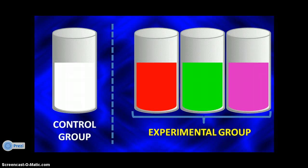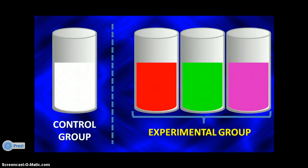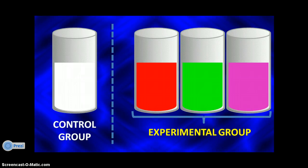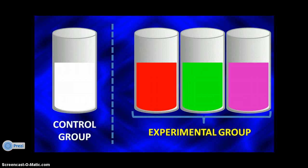An example of a controlled scientific experiment would be testing the types of drinks on people to see how that affects their heart rate. A control group, or normal group, would be those test subjects that we would just give water to, because water is our normal drink. In our experimental group, we give different things — for example, red, green, and purple drinks. So different color sodas would make up the experimental group.